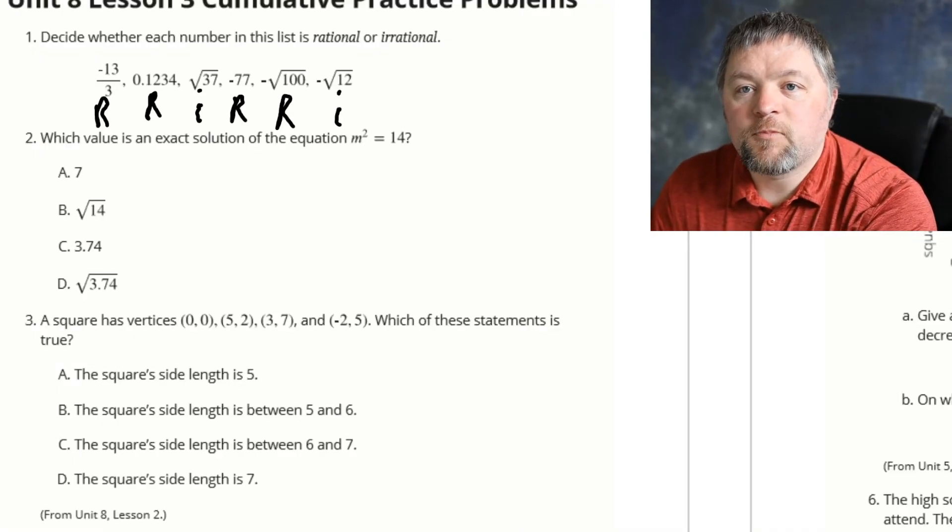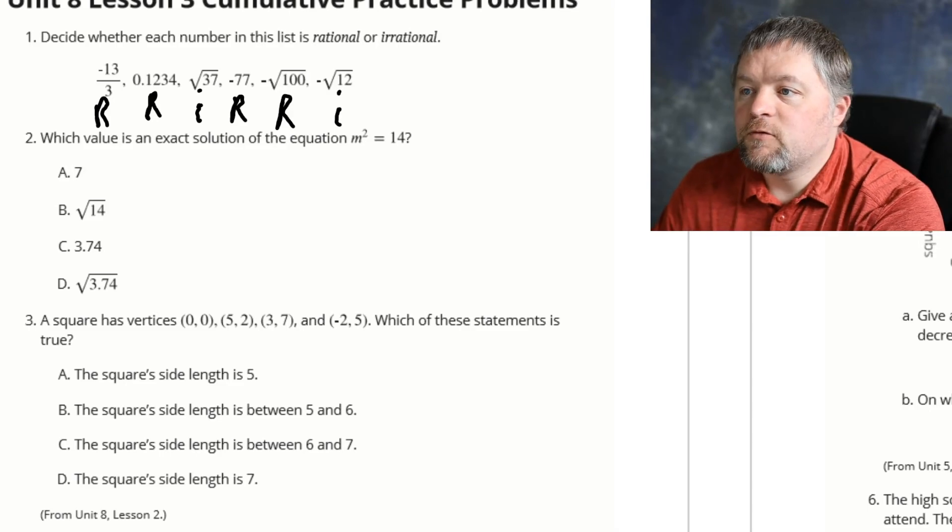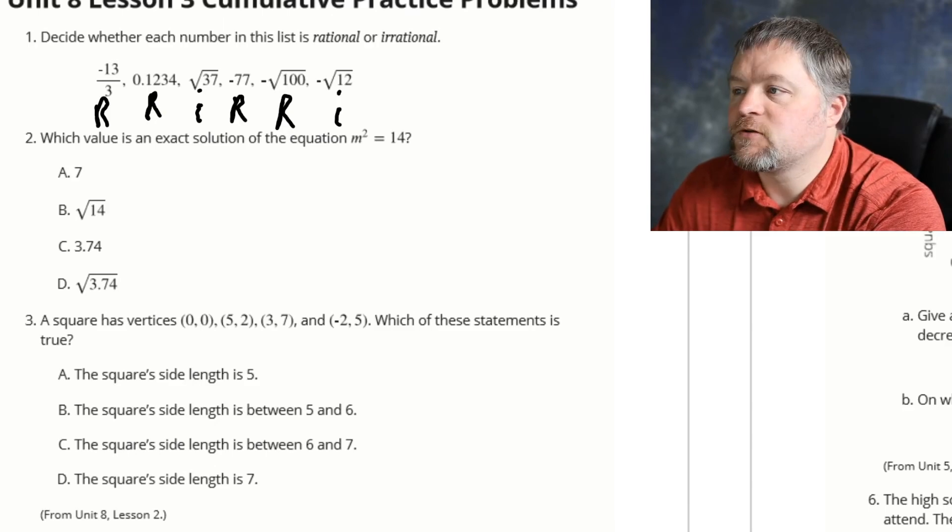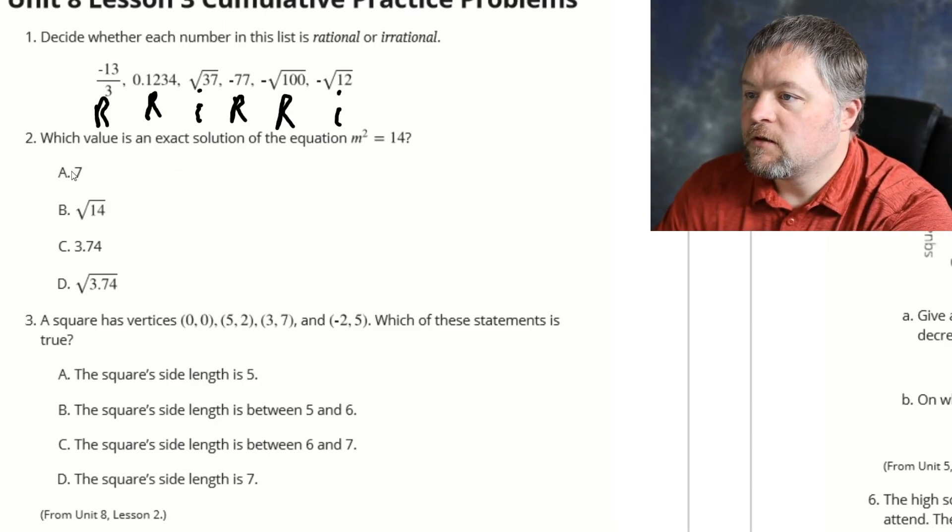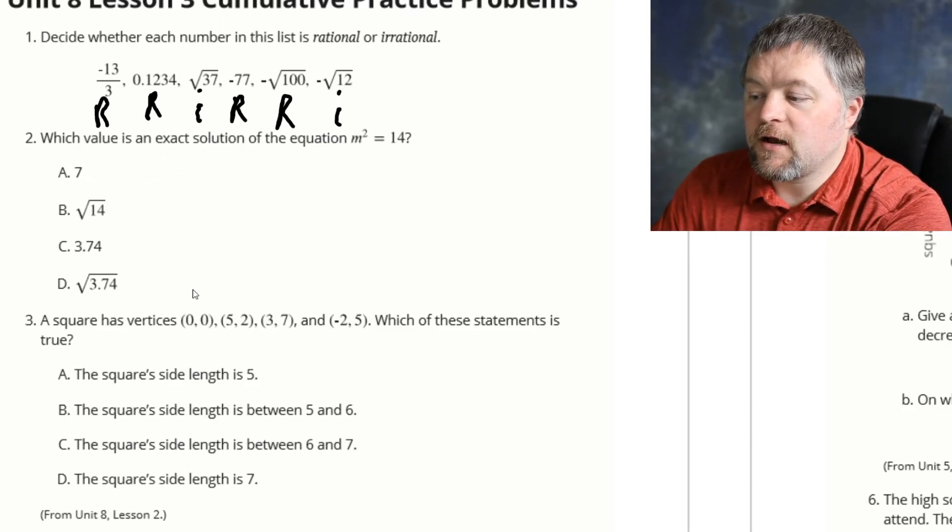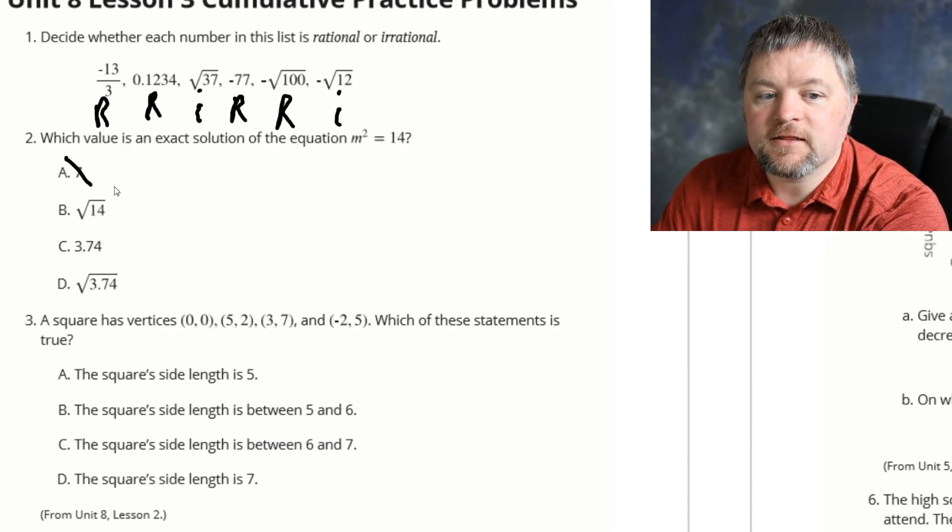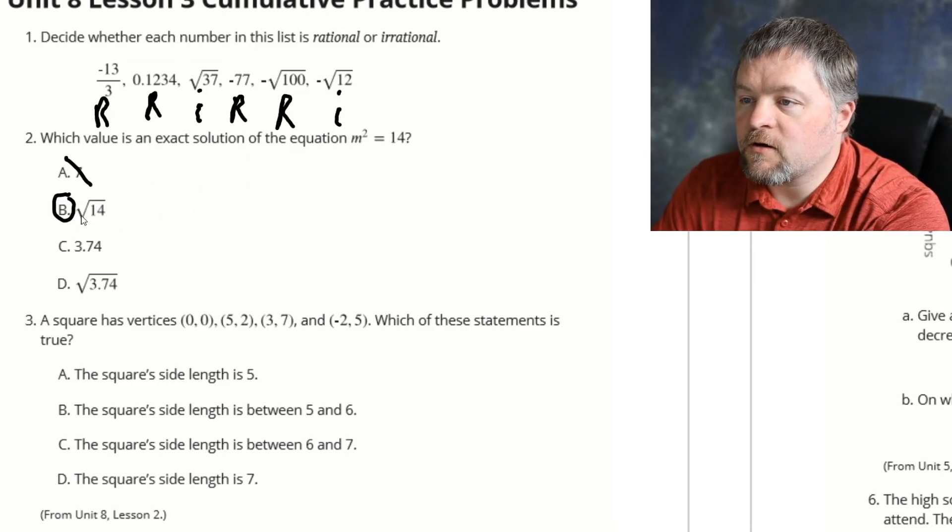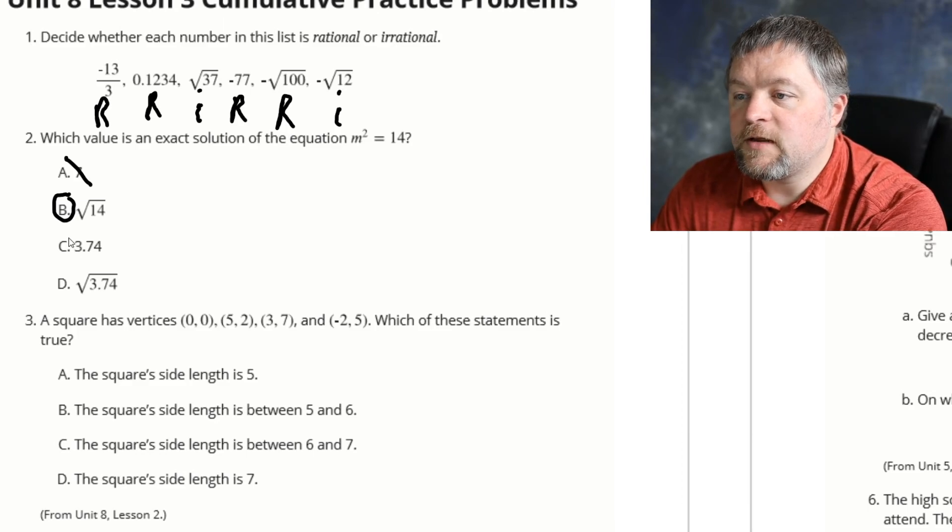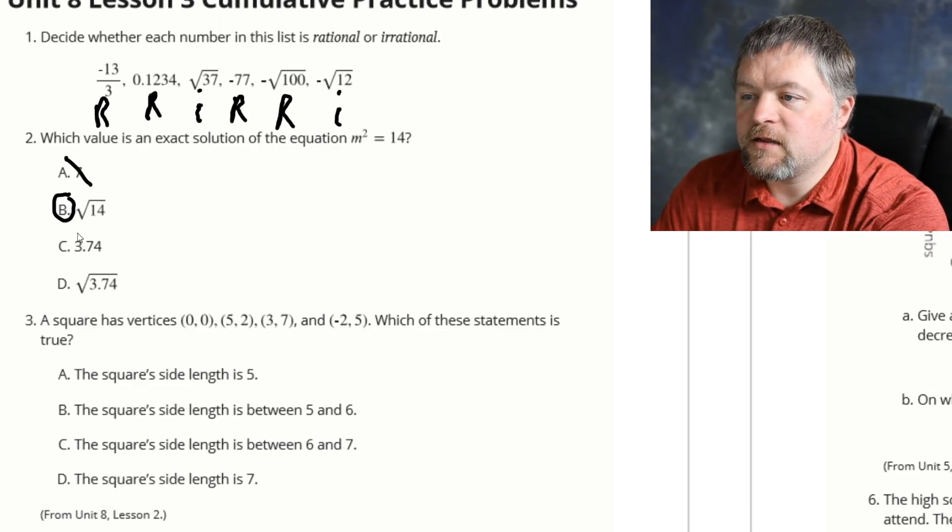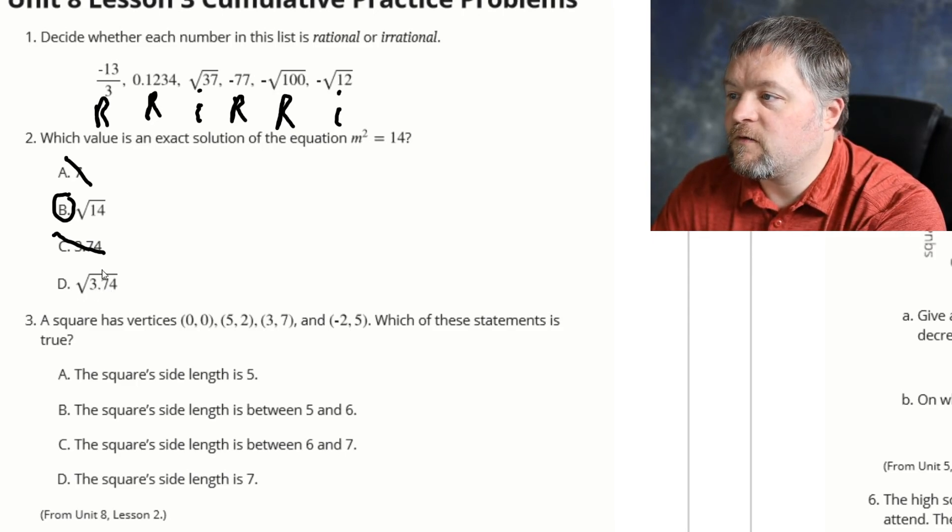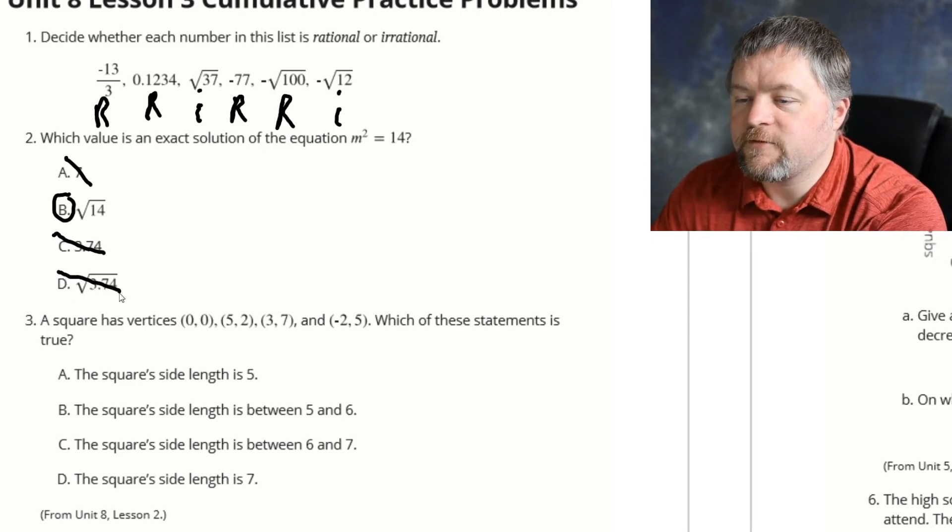For our next problem, it asks which value is an exact solution of the equation m squared equals 14? Well, 7 squared is 49, so that's definitely not it. The square root of 14. The square root of 14 squared is 14. That works. 3.74 might be approximate, but that is not exact. And the square root of 3.74 is definitely too small.